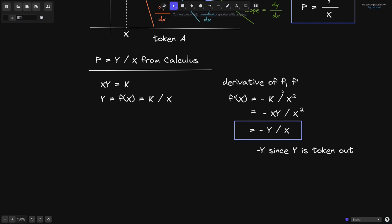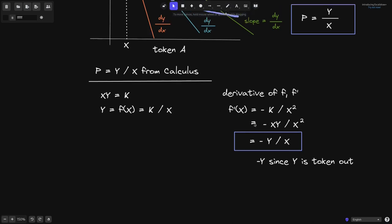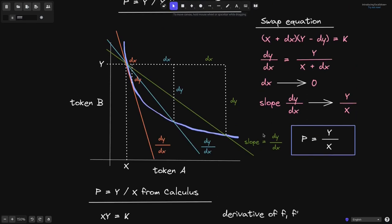The derivative of f describes the slope of the function f at x, and this equation says that the derivative of f at any point x is equal to minus y divided by x. We have a minus sign here since y is the amount of token that goes out. This calculus approach of deriving the spot price agrees with our geometric approach.